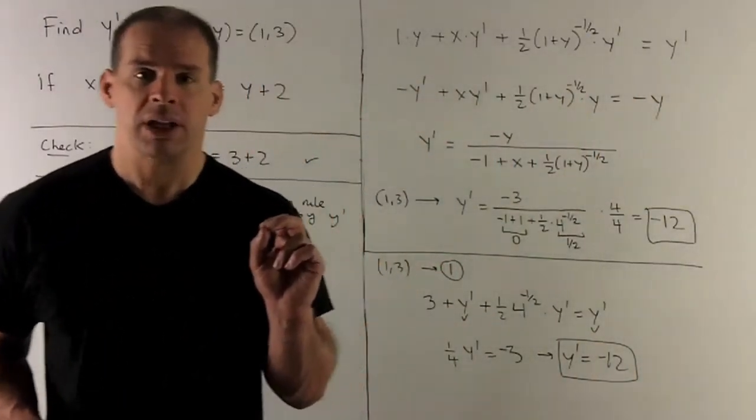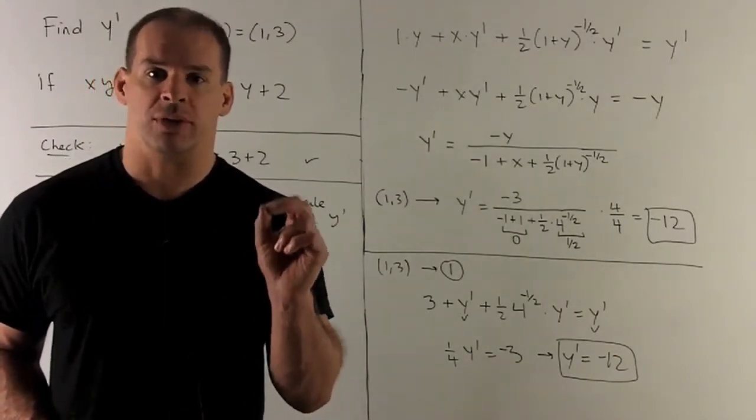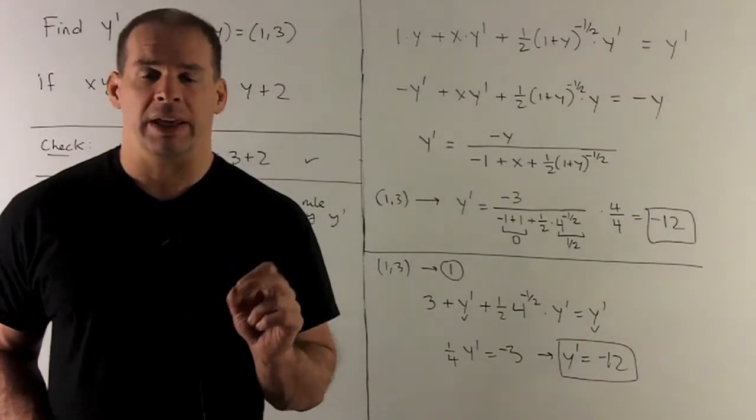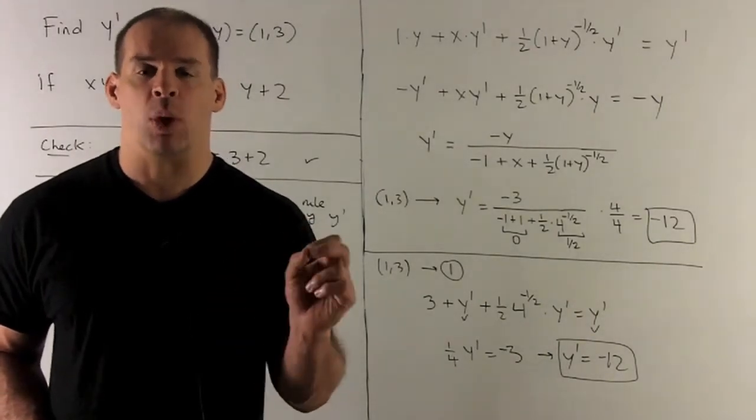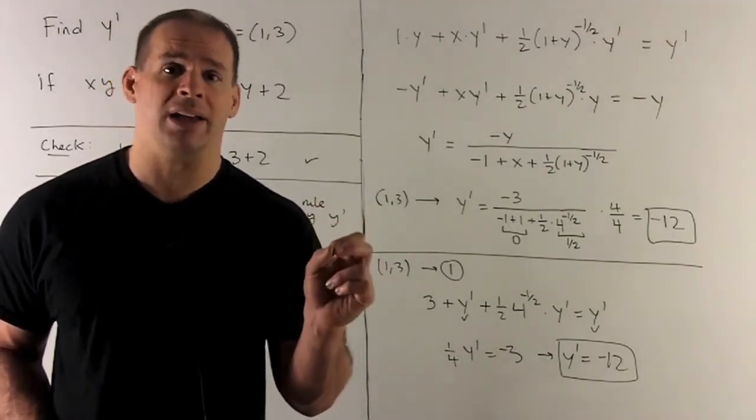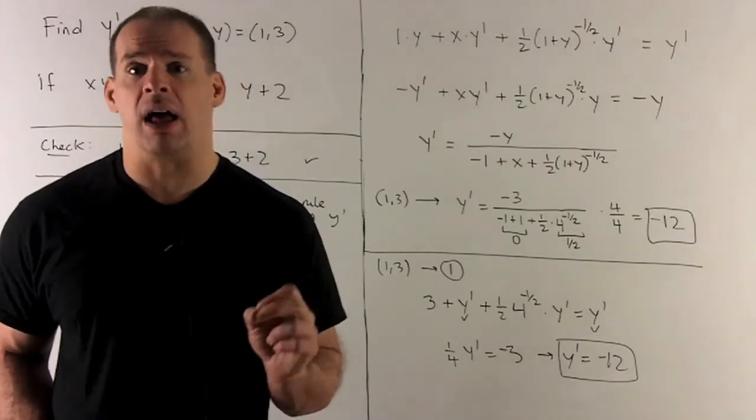Now what we're going to do, I have x times y. We're going to take the derivative of that with respect to x. So it's going to be a product rule. So it'll be derivative of x is one times y plus x times y prime. Derivative of y is just y prime. We don't know what that is. That's what we want to solve.